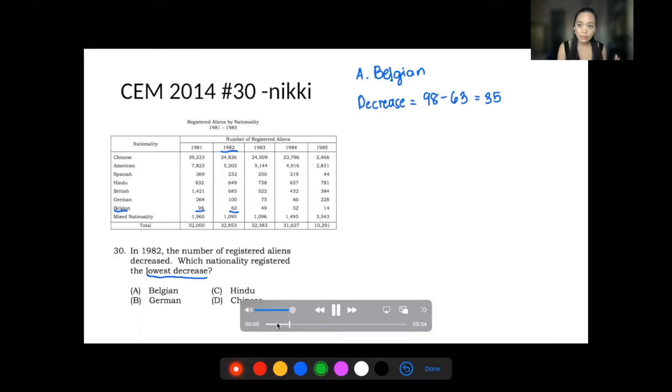Now let's go to Germany. We have 264, that's a decrease, minus 100, so we have 164.